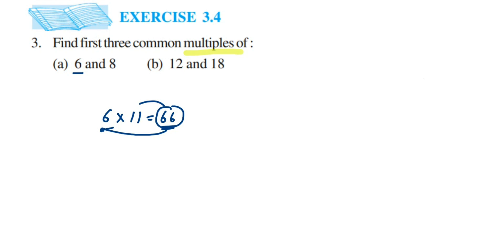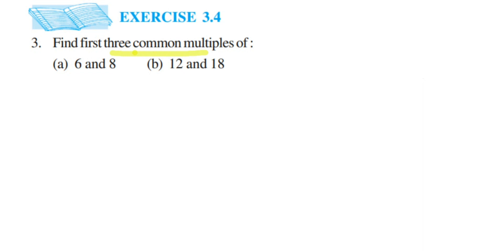Since they are asking us to find the common multiples — find three common multiples — instead of multiplying randomly, I am going to use the table of 6. The best way to find multiples, whenever they ask you, is to write the table of that number and those will be your multiples.